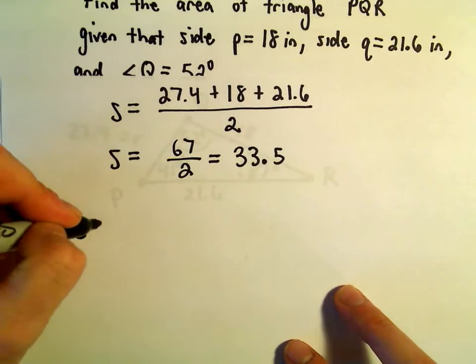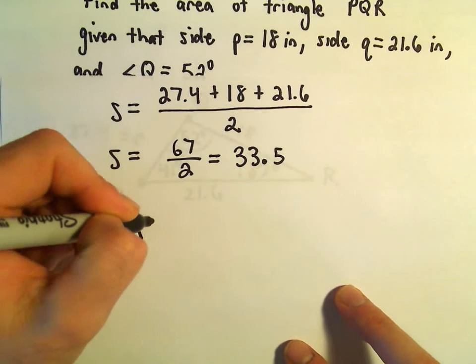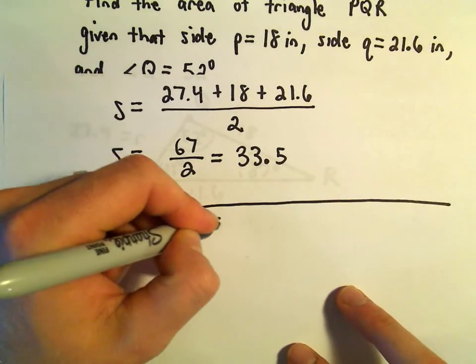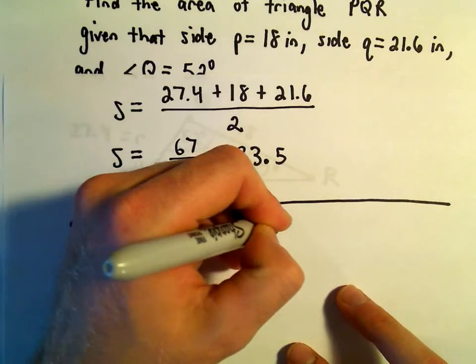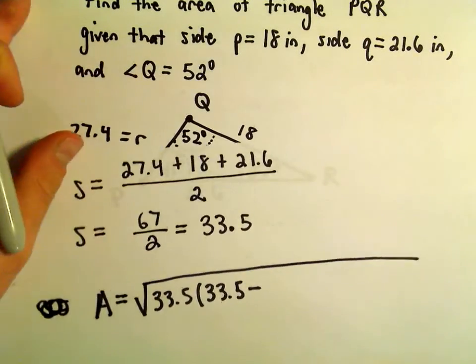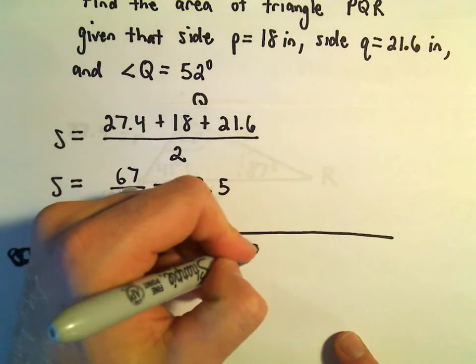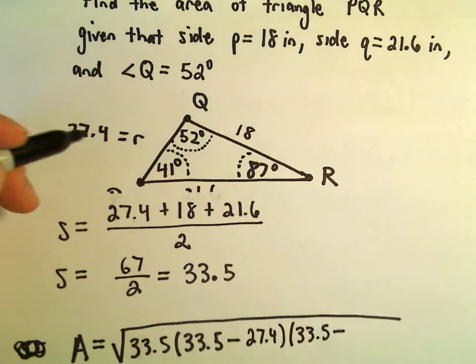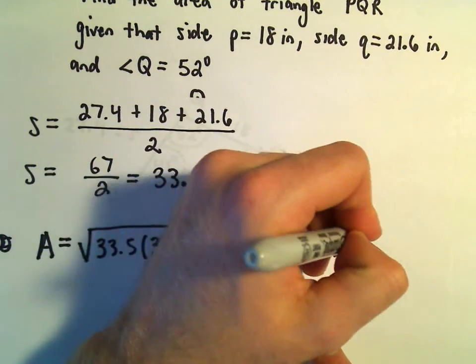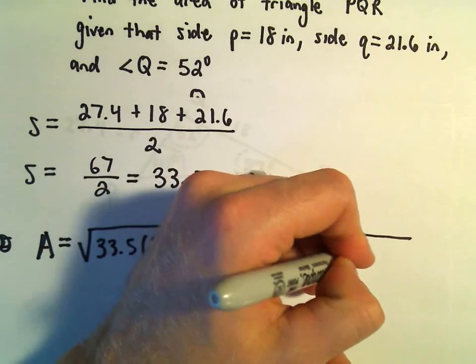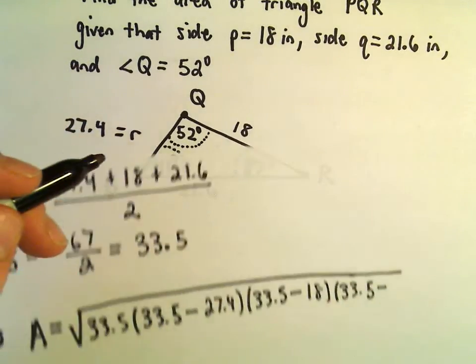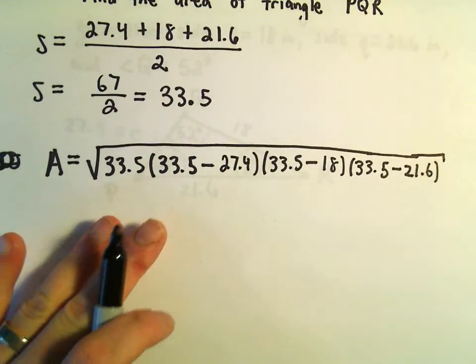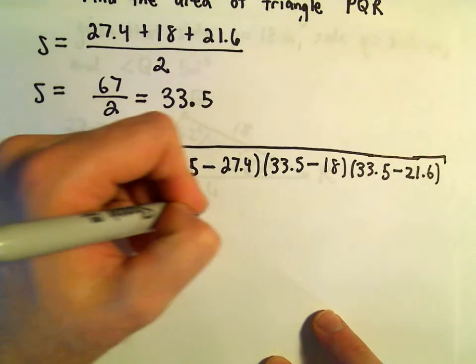So now we can just use Heron's formula. Not S, but now we're getting the area A. So it says we take 33.5. Then we have to take 33.5 and just subtract away each of the different lengths. So one of the lengths was 27.4. Then we would have to take 33.5 and subtract away 18. And then we would have to take 33.5, subtract away the other length, which was 21.6. And again, now it's just a bunch of arithmetic.